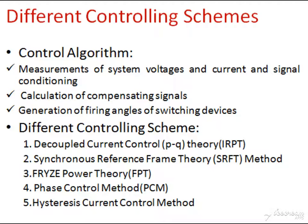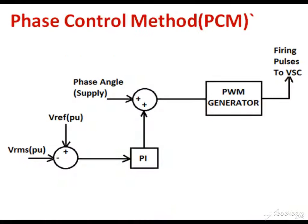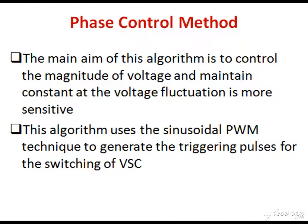The figure shows the basic block diagram of the phase control method. Here the VRMS value is compared with the reference value, which generates an error signal that is given to the PI controller. The PI controller generates an error angle delta, which is compared with the phase angle delta, and the error angle is supplied to the PWM generator which in turn generates the firing pulses. The main aim of this algorithm is to control the magnitude of voltage and maintain it constant where voltage fluctuation is more sensitive.